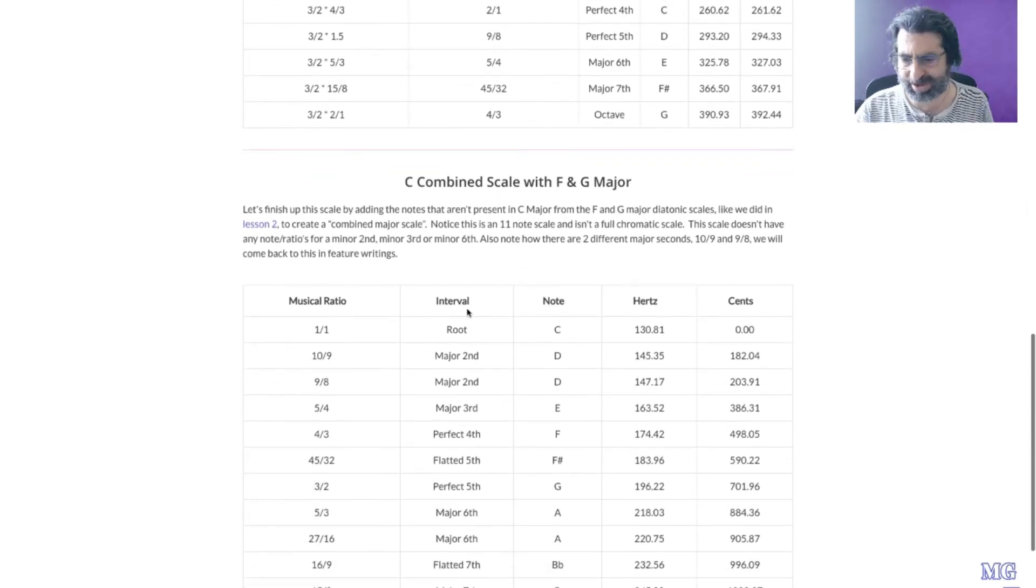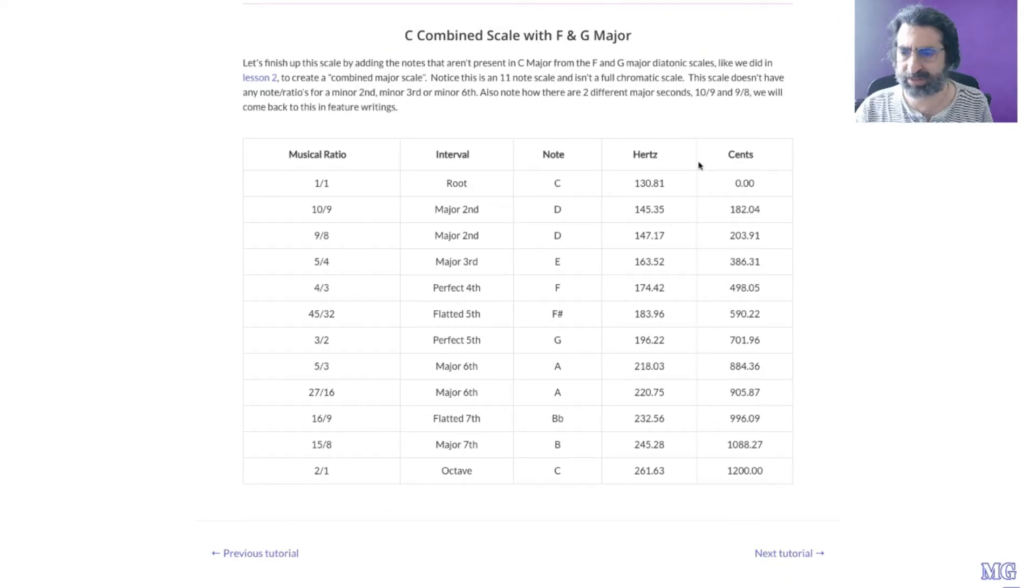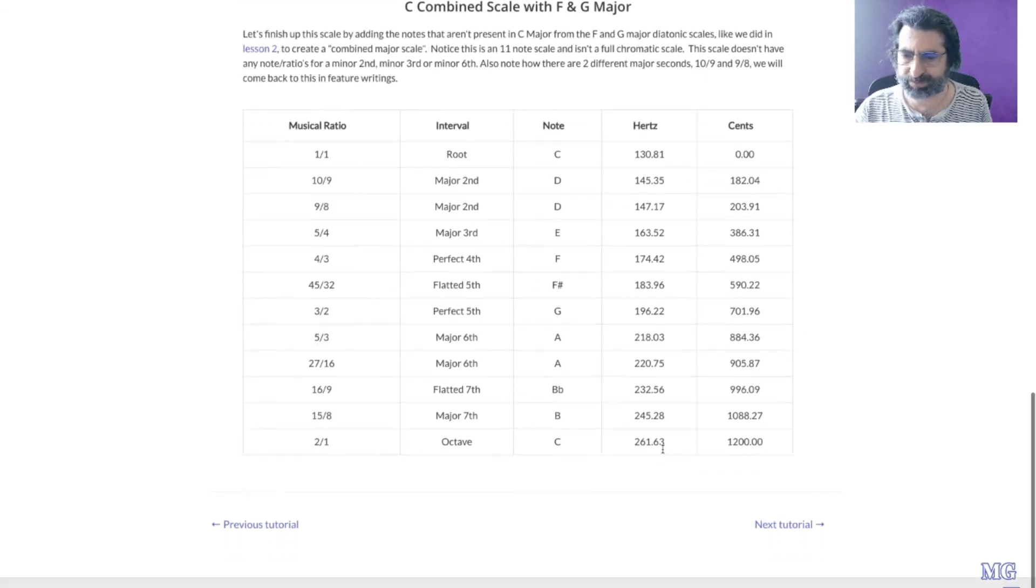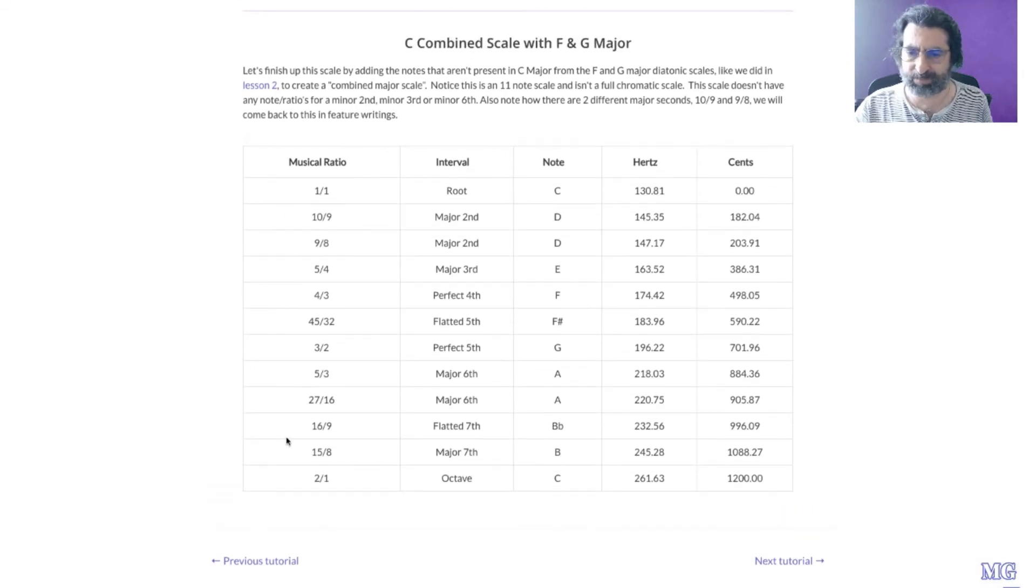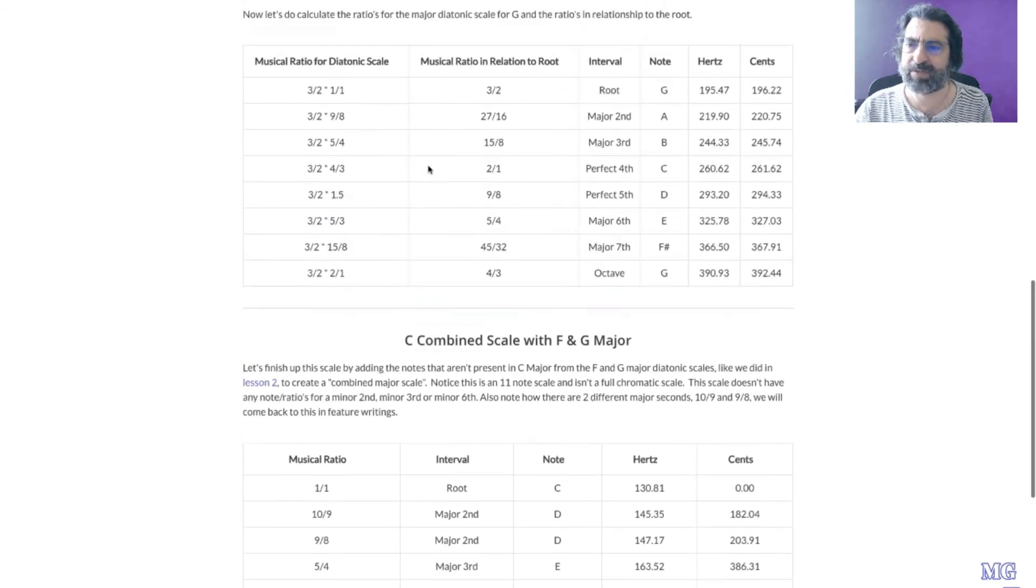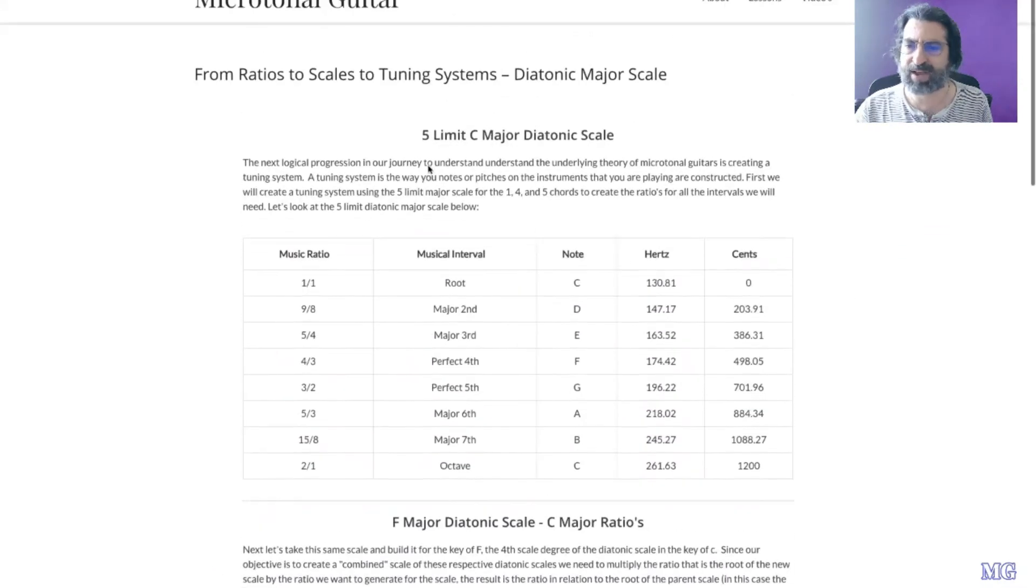So those are going to be our added pitches. Now when we add these all together, we've got a couple different types of seconds, a couple different types of 6ths. We've got this flatted 5th or tritone that comes from the perfect 5th, major 7th times 3 over 2 up a perfect 5th. And so basically this is now a conglomerate scale of 1, 4, 5 major diatonic just intonated scales, and I would have all these pitches on my instrument.